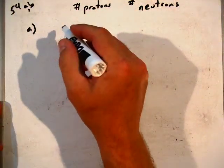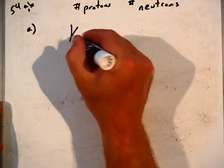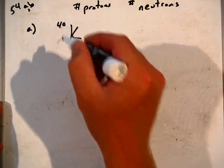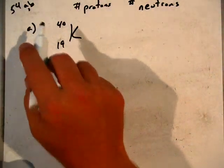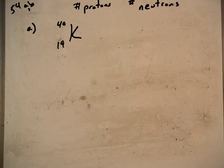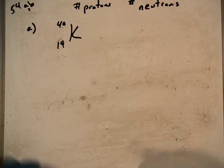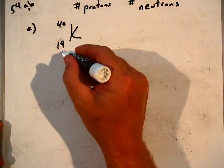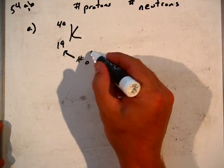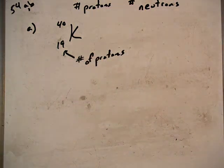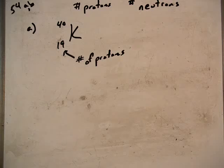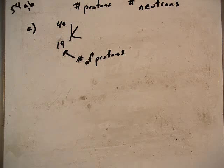For part A we're looking at potassium, and we often write these elements in this manner where we have potassium with this 40 superscript and this 19 subscript. The number at the bottom is the atomic number and that is always going to be the number of protons. If you go to your periodic table in the front of your textbook and you look at where potassium is, you'll see that potassium has the number 19.